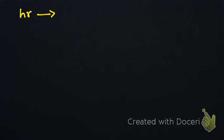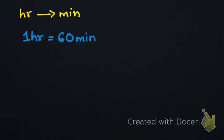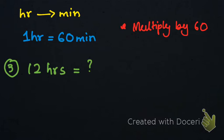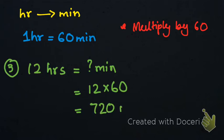The next conversion we have is from hours to minutes. We all know that in one hour we have 60 minutes. Just like we did for minutes and seconds, we are going to multiply by 60. For example, we have 12 hours and we need to convert them into minutes, so we multiply 12 by 60, which equals 720 minutes.